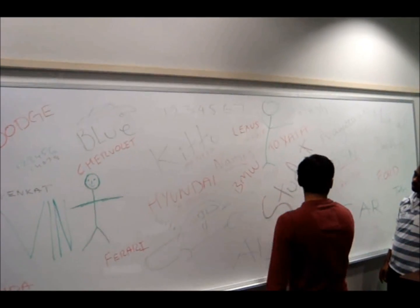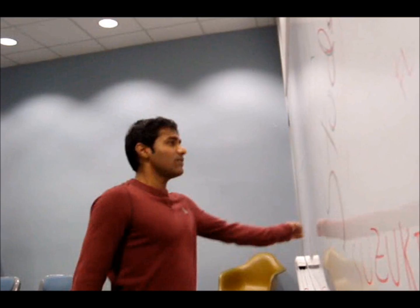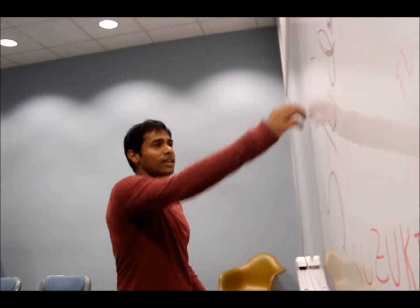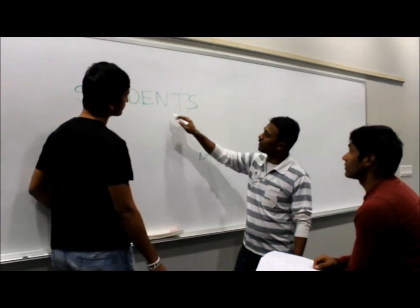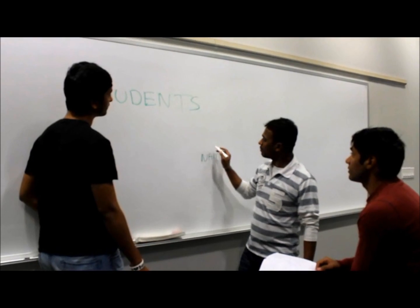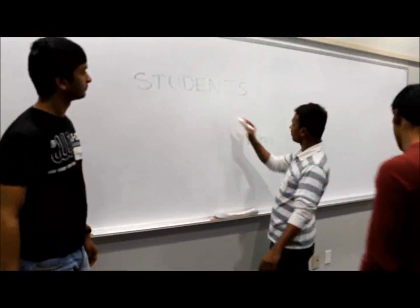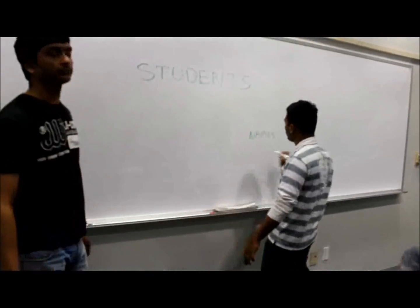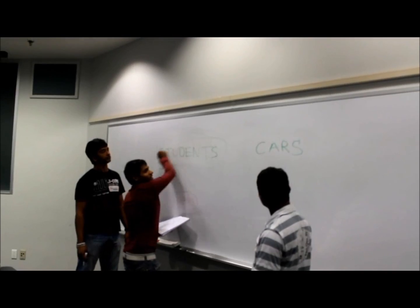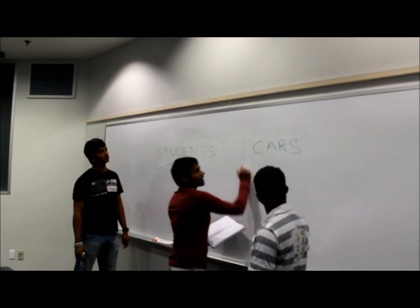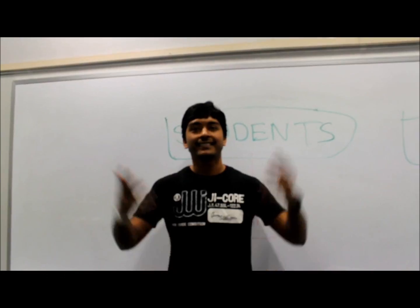So you got students, cars, numbers, names — let's list out the major nouns. Students and names: names is associated to students, maybe an attribute. So the entities are students and cars.